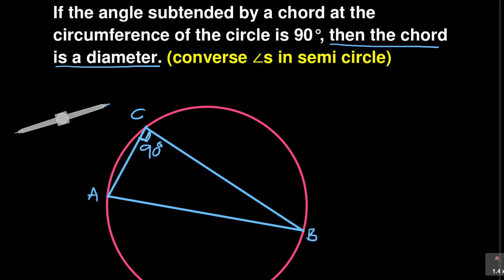Then you must know that this particular line is called the diameter. It is passing through the center. So just know that it's a diameter — it's the longest line. That line is called the diameter, meaning the center is along that line. The center of the circle lies along that line. So it's a converse theorem. If they're saying prove that AB is a diameter, you're going to prove that the angle is 90 degrees. The moment you prove that, it means AB is a diameter. The reasoning: converse of angles in a semicircle.